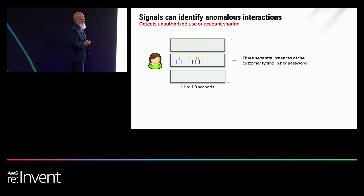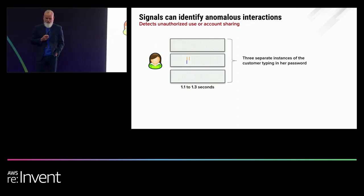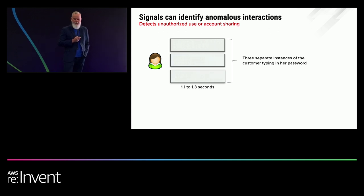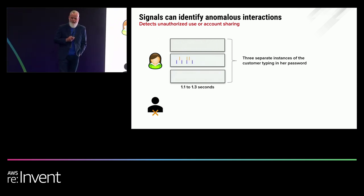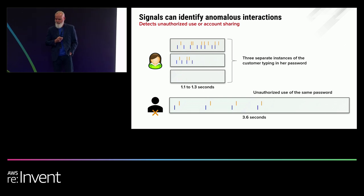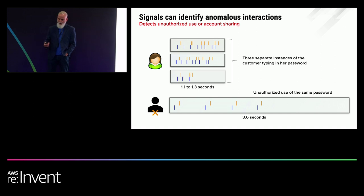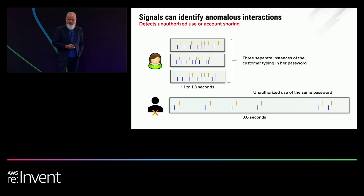This is a woman entering her password three separate times. They may not look identical, but if you break it into sections, the first three events are identical, the next three are identical, the next six identical, and the final four also identical. This is how a bad actor enters the same password — and this makes sense. We develop a rhythm entering our password over and over again. A bad actor could type the correct password, but he's not going to be able to match that rhythm.